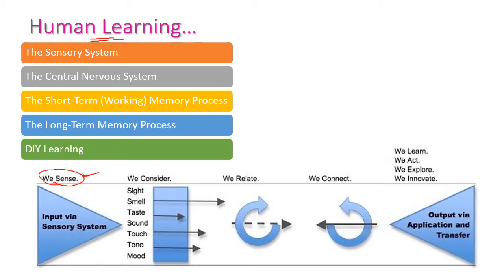What is human learning? Human learning means using our sensory systems — our sensory organs — to observe the environment. The sensory systems we have are sight, smell, taste, sound, touch, tone (voice), and mood. These are considered the sensory system that acts as input devices of our human system.